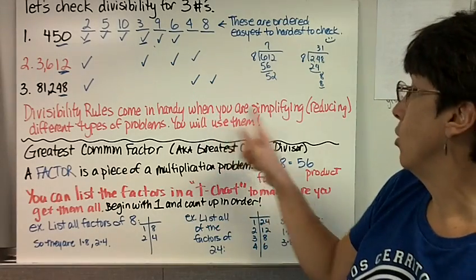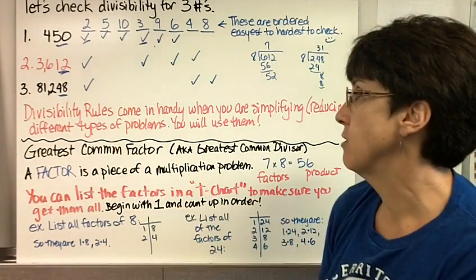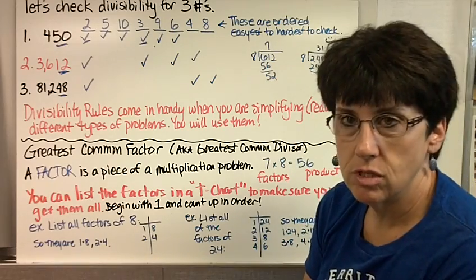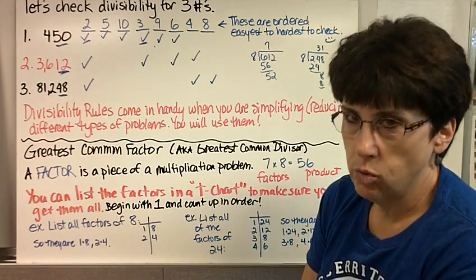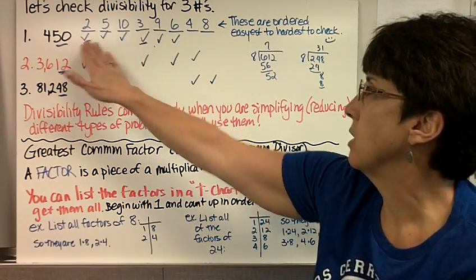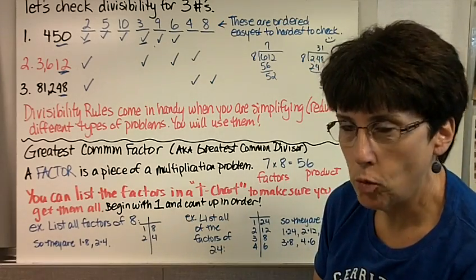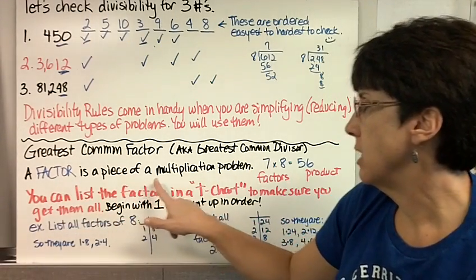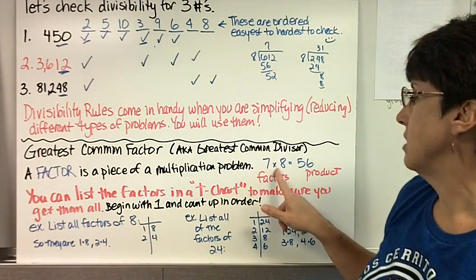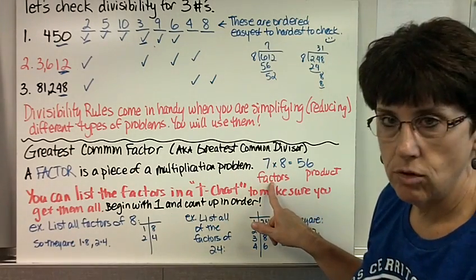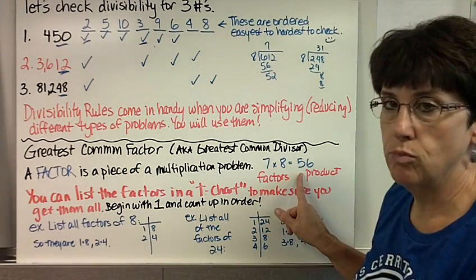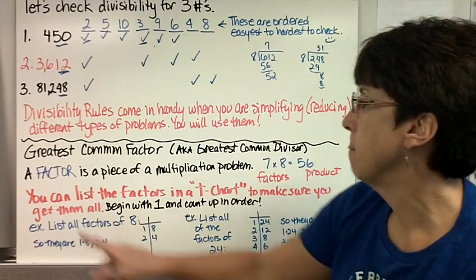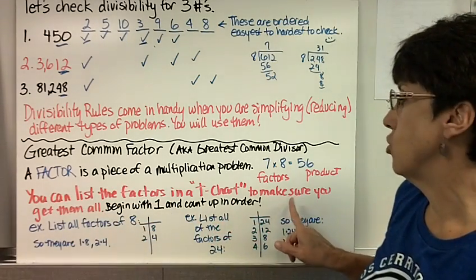Divisibility rules come in handy when you are simplifying, which means reducing in this case, different types of problems. You will be using them in math. 8 is probably the least used. And 4, if you divide by 2, you can just do it twice, and that's the same as dividing by 4. But these are pretty common. Greatest common factor, also known as greatest common divisor. A factor is a piece of a multiplication problem. 7 times 8 equals 56. 7 times 8 are the factors. 56 is the product.